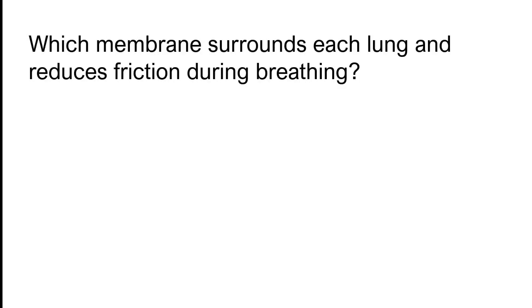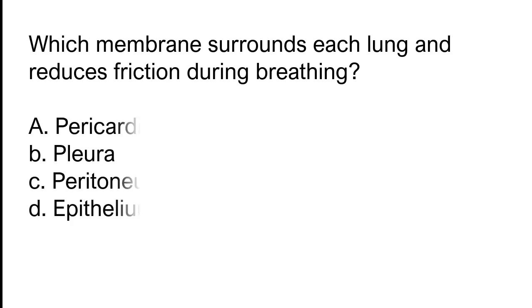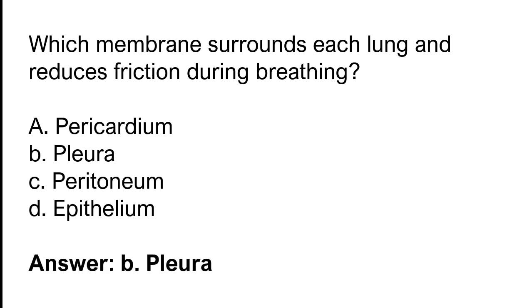Which membrane surrounds each lung and reduces friction during breathing? Pericardium, pleura, epithelium. The correct answer is option B. The pleura membrane surrounds each lung and reduces friction during breathing.